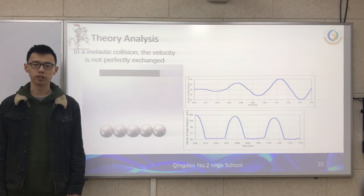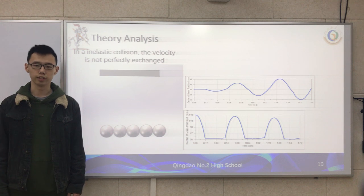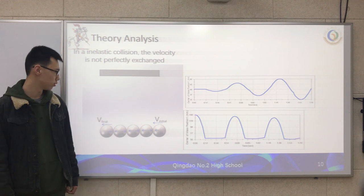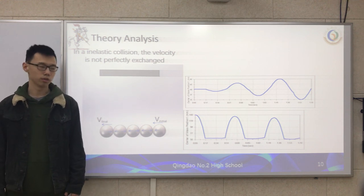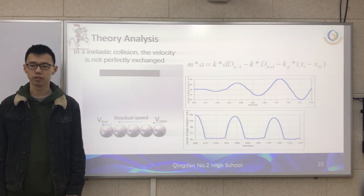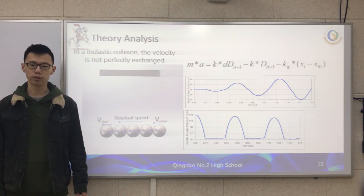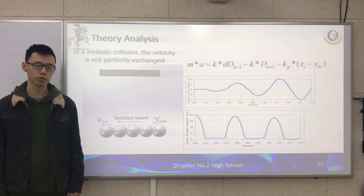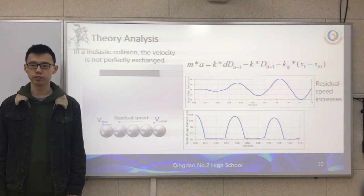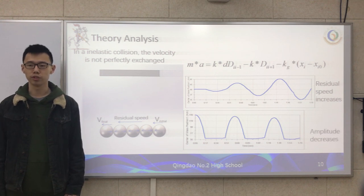But in the real case, it is not an elastic collision — it is a non-elastic collision. So the velocity is not perfectly exchanged. The first ball has an initial velocity and the final ball has a final velocity, and all balls will press against each other. All three balls in the middle will have residual speed. To calculate the speed, we can use the equation or export the data from SOLIDWORKS. We can see that residual speed increases and amplitude decreases.